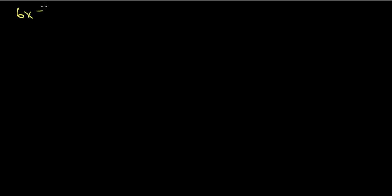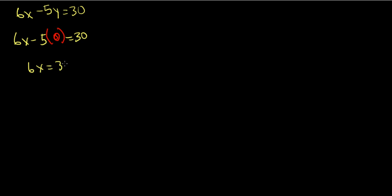Now we're going to look at an example of finding slope from an equation. Here we have the equation 6x minus 5y equals 30. We want to start off by finding two sets of coordinates, so we're going to find the x-intercept and the y-intercept. We're going to find the x-intercept by replacing y with 0. So 6x minus 5 times 0 equals 30. When we simplify, we get 6x equals 30. In order to isolate the variable x, divide both sides by 6. So you get x equals 5, which would be the x-intercept and give us the coordinate pair 5, 0.